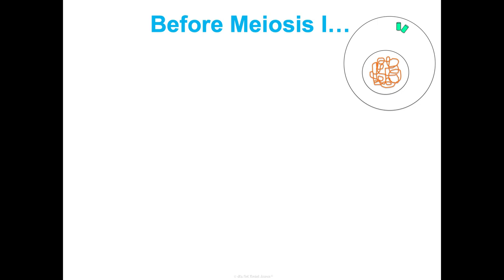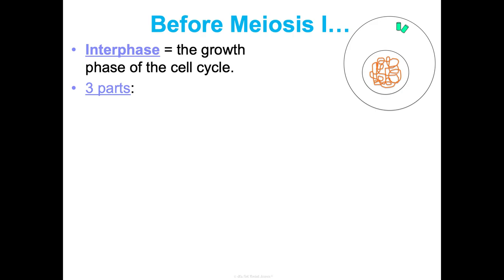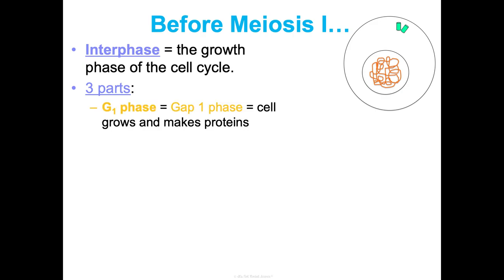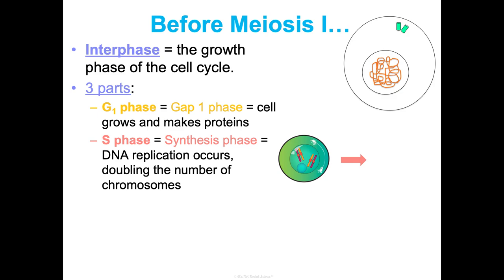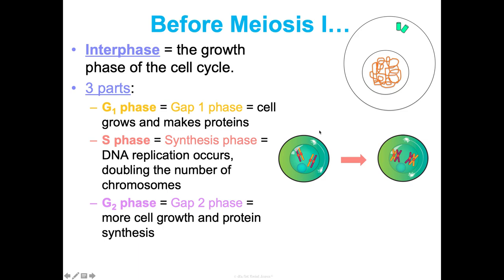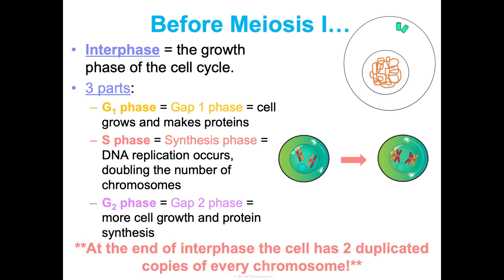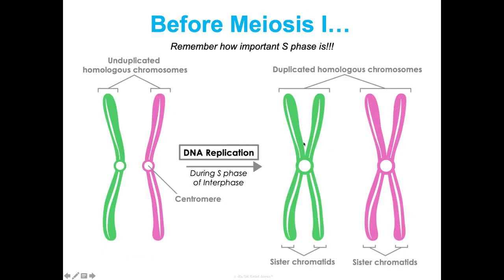Before any type of cell division, we're in interphase — the growth phase. Interphase has three parts: G1, where cells are growing and making proteins; S phase, which is synthesis — this is DNA replication where we're doubling the number of chromosomes by making a copy of our DNA, going from single chromosomes to sister chromatids; and G2, gap two, with more cell growth and protein synthesis. At the end of interphase, we have two copies of every chromosome — duplicated chromosomes — and we're ready to get into the division part.